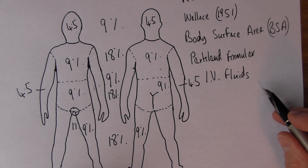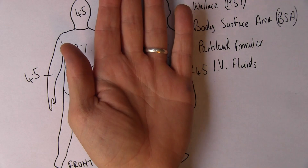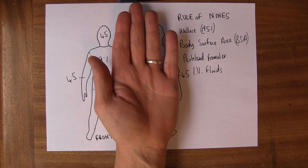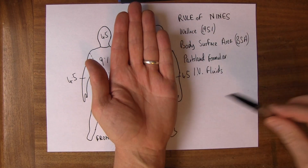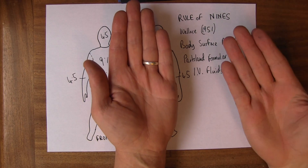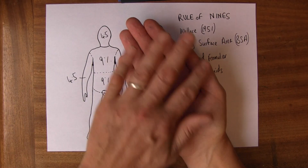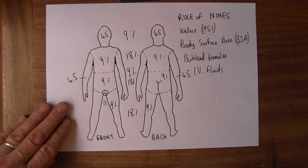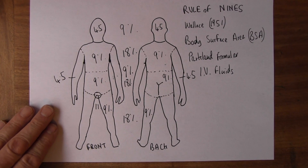Now another way to think about this for smaller areas — let's look at my hand. My fingers and palm together are 1% of my body surface area. So we can take any individual's hand, including the fingers, and that is going to be approximately 1% of body surface area — another rough and ready reckoner.